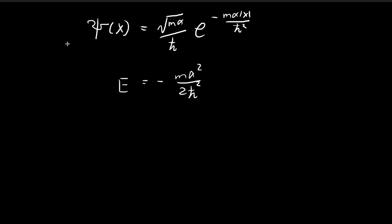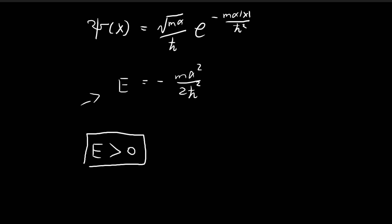In the past few videos, we came to the conclusion that for the case where the energy level is smaller than 0, for the Dirac delta potential, psi of x is equal to this with this allowed energy level. So now we're going to consider the second case where the energy level is larger than 0.